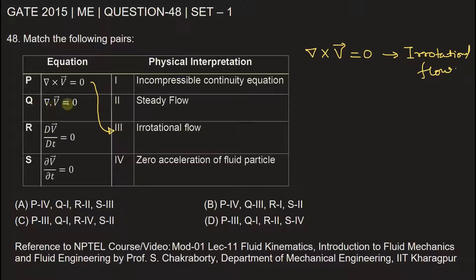Now Q is del dot V vector. The divergence of velocity vector when it is equal to zero. If we write the continuity equation, we have ∂ρ/∂t plus del dot ρV is equal to zero. And if the flow is incompressible, that means the density will remain constant, so this value will be zero. First term is zero. The density will come outside, del dot V will be equal to zero. And this will give the divergence of velocity is equal to zero. So Q will match with one.